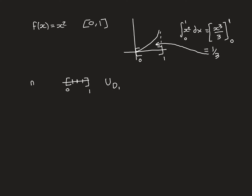The upper Riemann sum over dissection D_n of f(x) = x squared is going to be the sum from i = 1 to n. Each interval has equal length 1/n, since the whole interval has length 1 and we've divided it into n pieces. So the length part of the upper Riemann sum is replaced with 1/n — previously we would have had x_i minus x_{i-1}, but now it's constant for all i, which is much simpler. We then need times the supremum of x squared over each sub-interval.